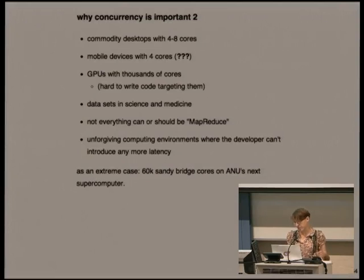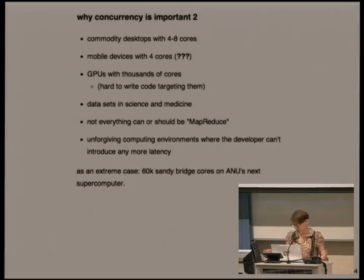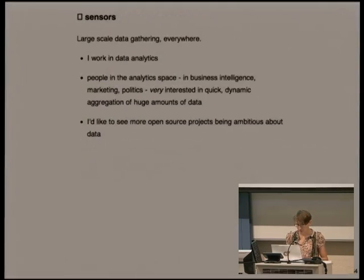Not everything can or should be map-reduced, which means even if you've got some huge expensive cluster, you don't always want to actually express your problem that way. If you have an unforgiving environment where you can't introduce latency by sending data over the network, you need to take advantage of what you can do on a single host. One of the people from ANU lecturing said they're soon getting a supercomputer with 60,000 Sandy Bridge cores, and apparently it runs Linux, so you could presumably write applications that target that.